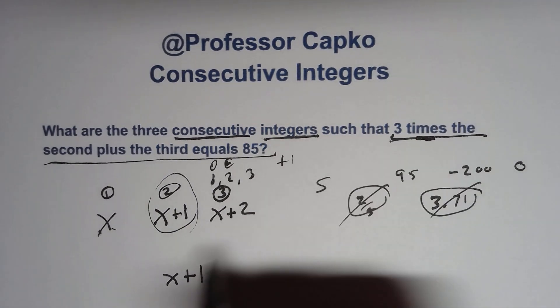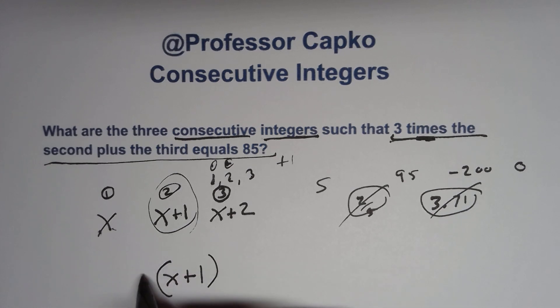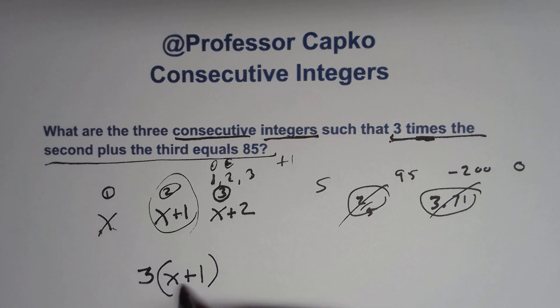When you see times, that means we're multiplying by three. And I put this in parentheses because the entire thing is the integer. The X isn't the integer. It's X plus one is representing your integer. So I'm just going to put it in parentheses because I want to multiply three by the entire thing.